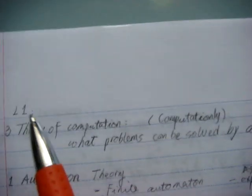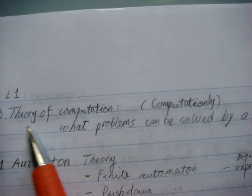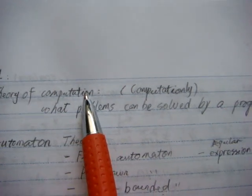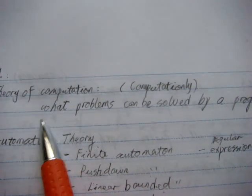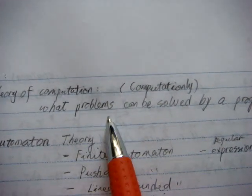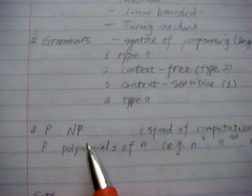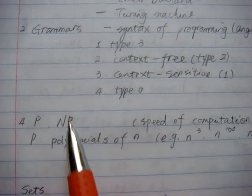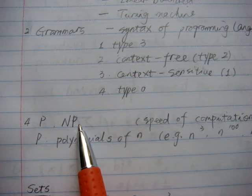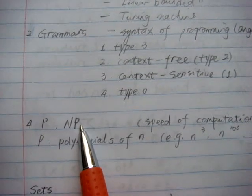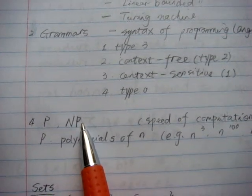And then we're going to talk about the theory of computation — mainly what problems can be solved by a program. Next, we're going to look at the speed of computation. We're going to talk about P and NP, and what problems can be solved in polynomial time.